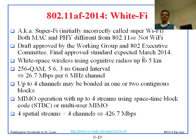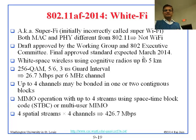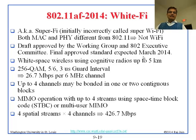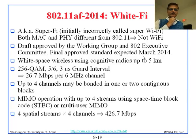The draft has been approved by the working group and the 802 executive committee — it is just waiting on final signatures. The technology uses cognitive radios and can reach up to 5 kilometers. Since the channel width is very small, it uses 256-QAM with 5 and 6 microsecond guard intervals, similar to 802.11n. It can achieve up to 26 Mbps per 6 MHz channel. Up to four channels may be bonded together in one or two contiguous blocks, and MIMO can be used for four parallel streams, giving 4 streams × 4 channels × 26 Mbps = 426 Mbps maximum.